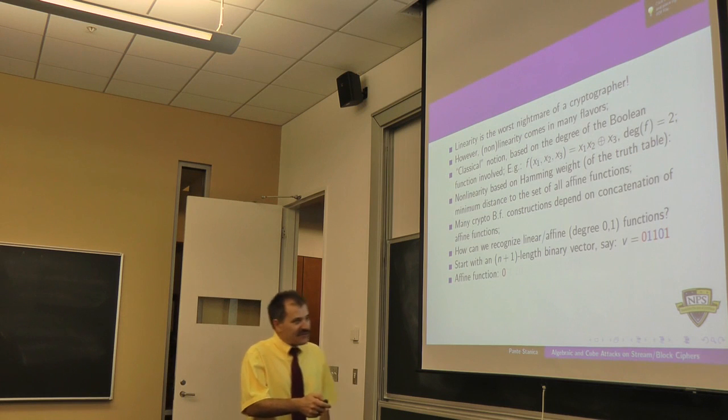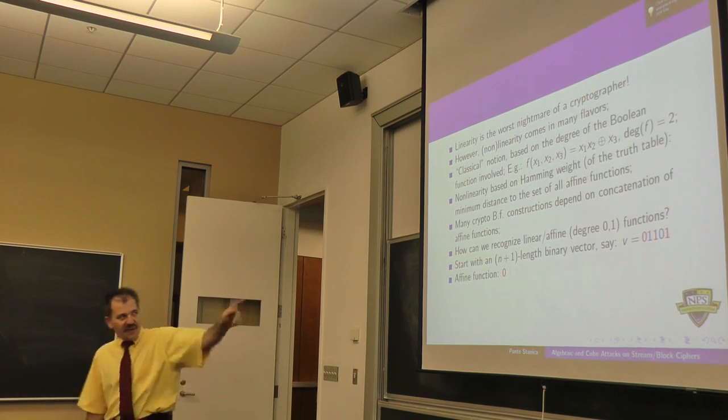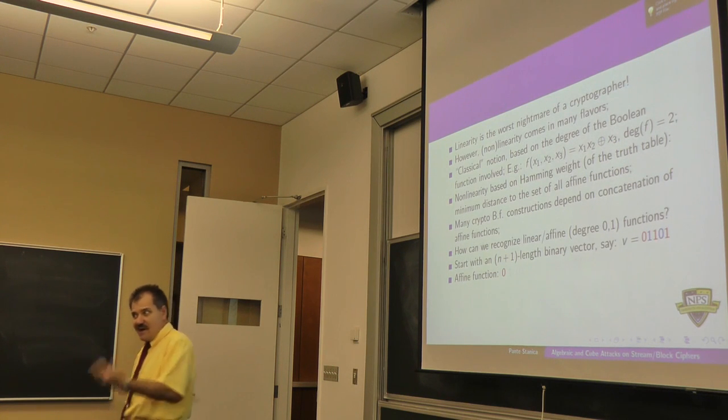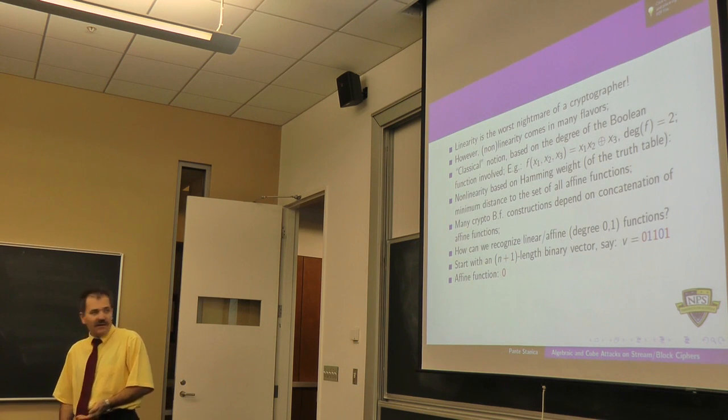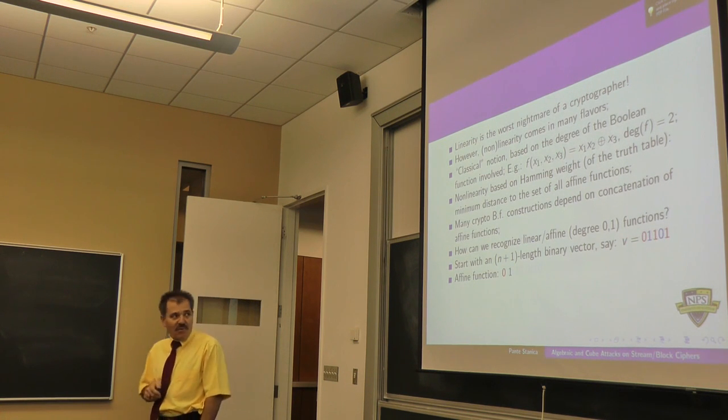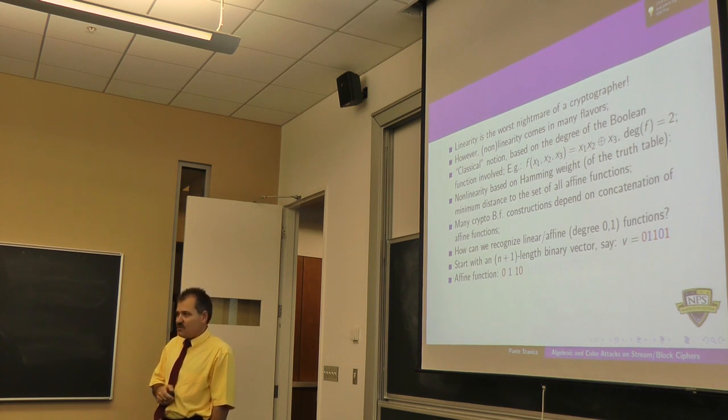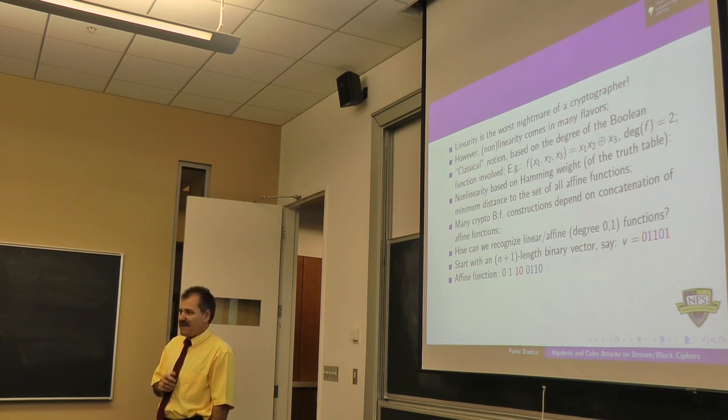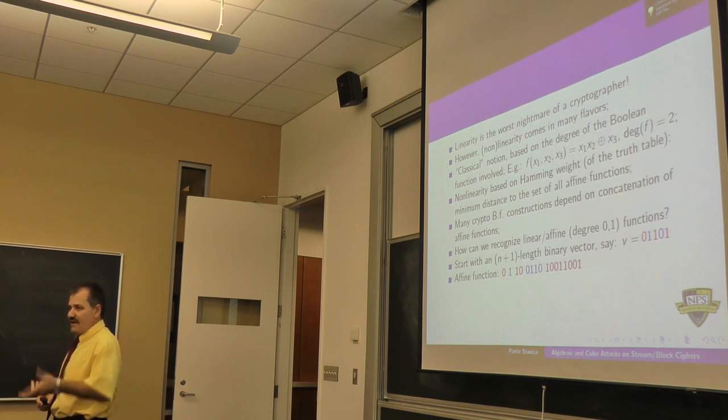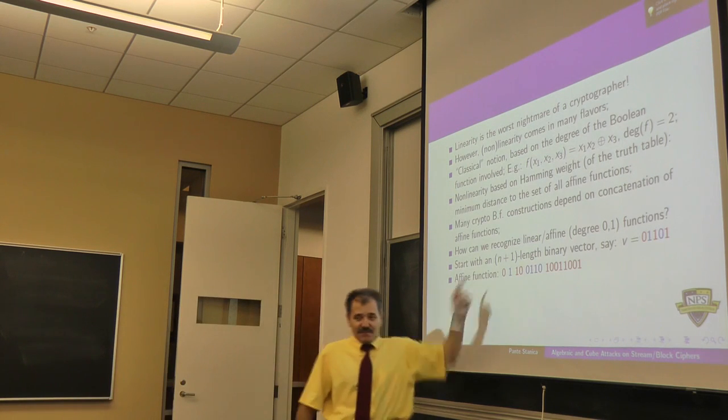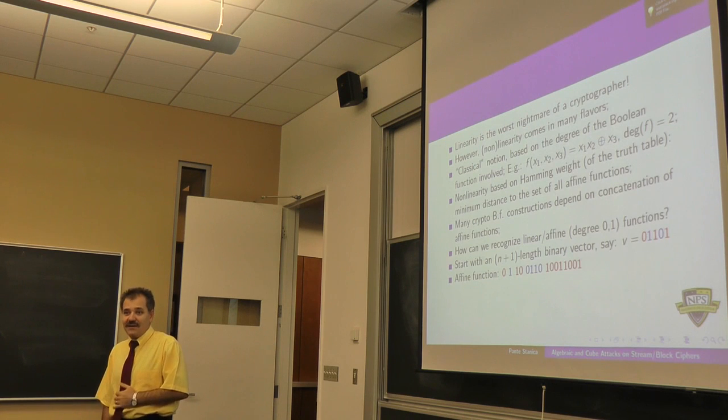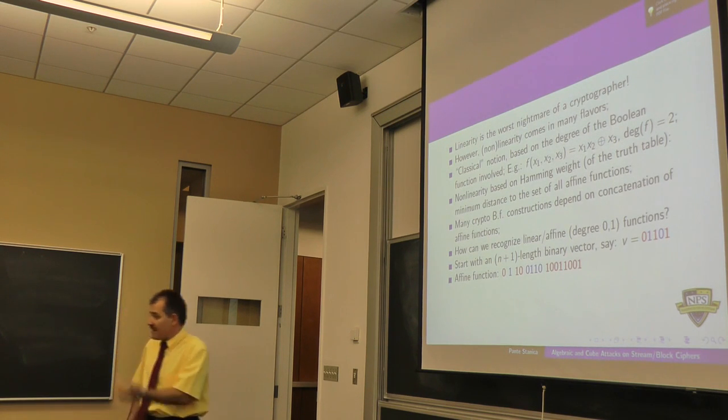Let's say I'm giving you an n plus 1 length binary vector. Here I have 5, so my n is 4. I color coded them for a purpose. Here's how we construct an affine function. I put the first bit as the first bit in my construction. I scan this n plus 1 bit vector. Whenever I encounter a 0, I copy what I had before unchanged. Whenever I encounter a 1, I complement what I had before. That's a linear function. This starting bit says whether it's linear or really affine.